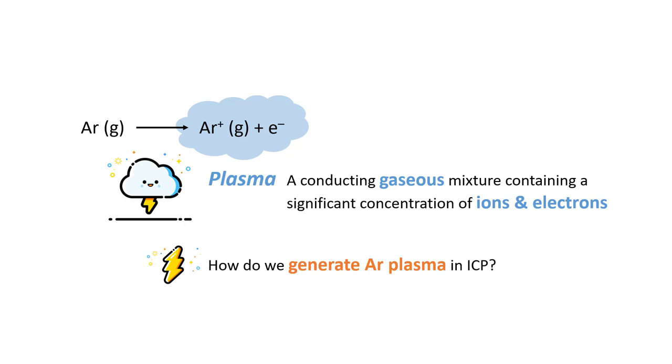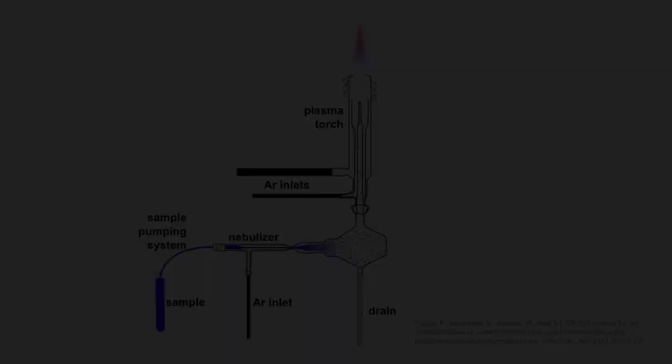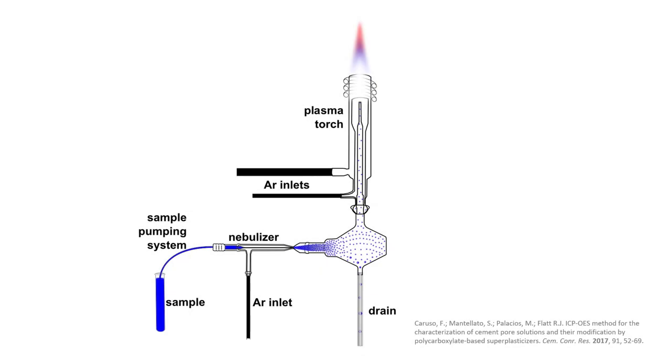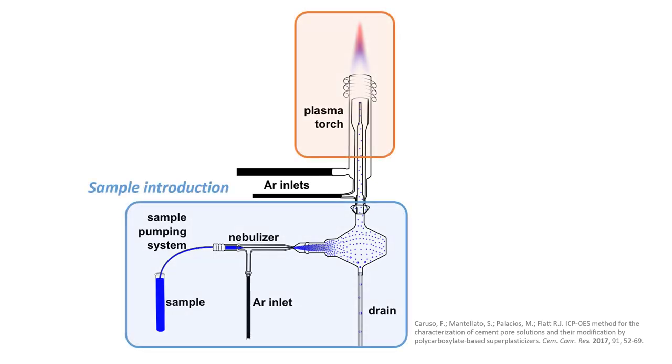So how do we generate argon plasma in ICP? Well, let's take a closer look at the instrumentation. This diagram here shows a typical setup of an ICP instrument, which consists of a sample introduction system and a plasma torch.